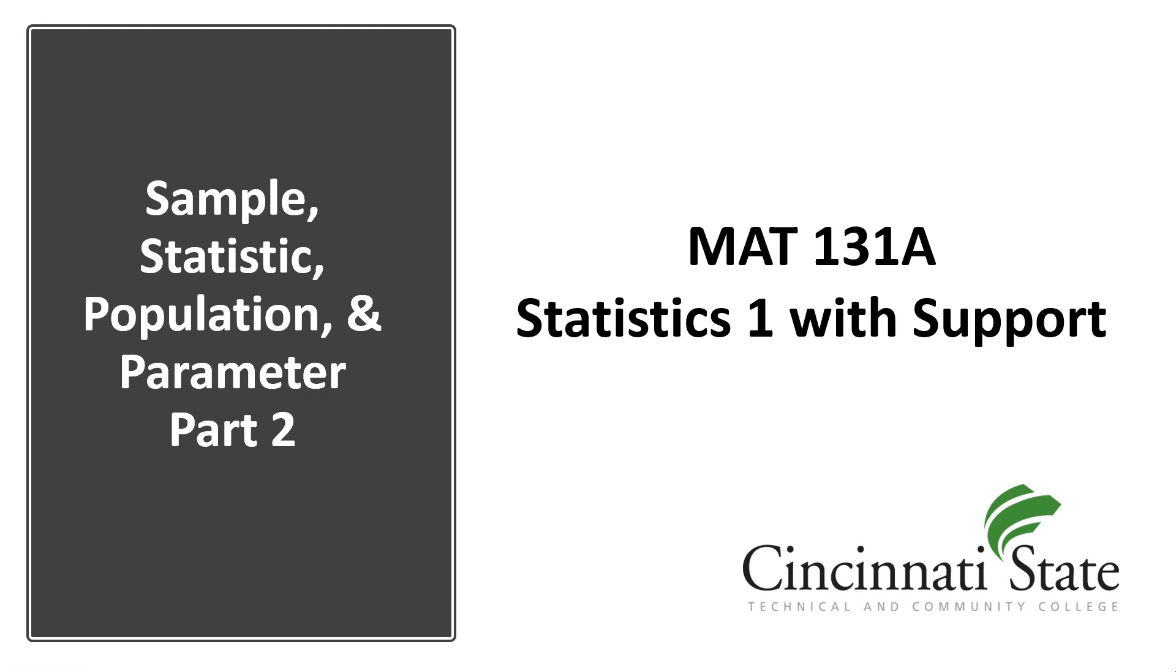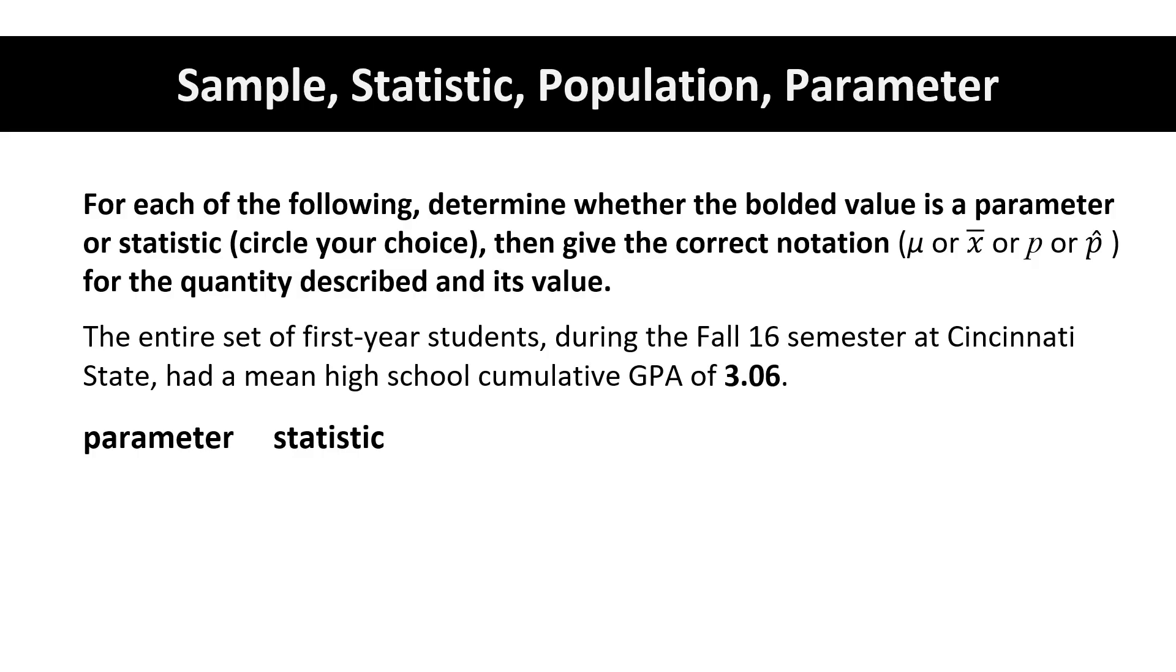Sample, statistic, population, and parameter part 2. For each of the following, determine whether the bolded value is a parameter or statistic, then give the correct notation for the quantity described and its value. The entire set of first-year students during the Fall 16 semester at Cincinnati State had a mean high school cumulative GPA of 3.06.